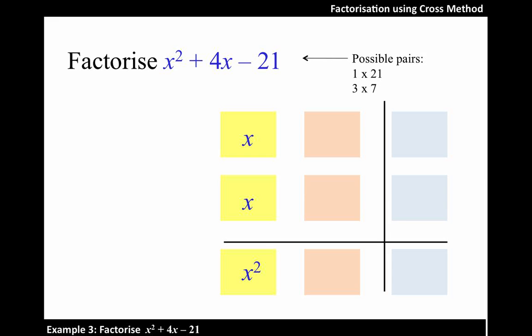Now, let's look at the middle term, which is 4x. Which pair is likely to give us a 4? 3 and 7.